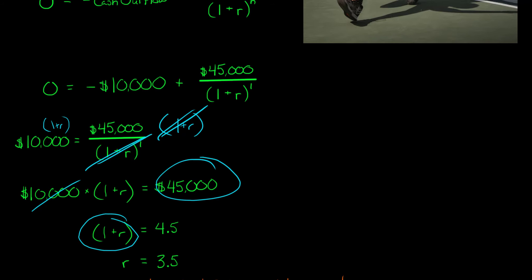So now we have one plus R equal to 4.5. So we just subtract one from each side. So it goes away here. And then we subtract one from 4.5. And we are left with 3.5.